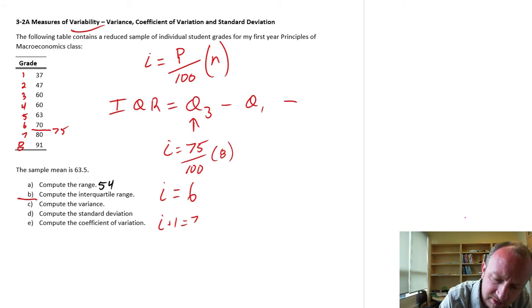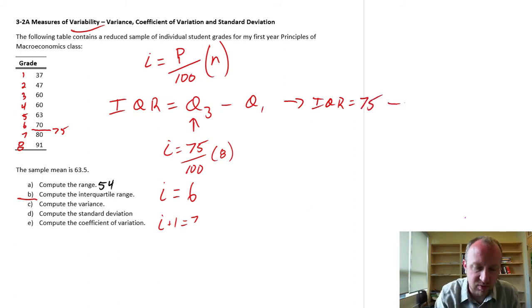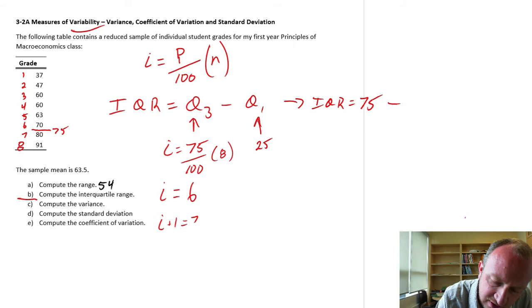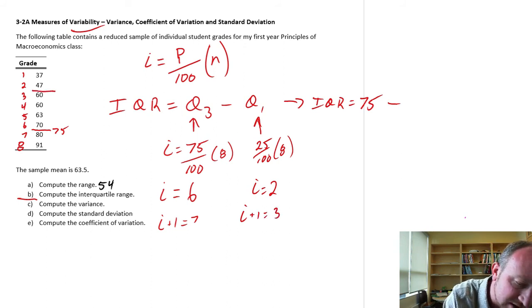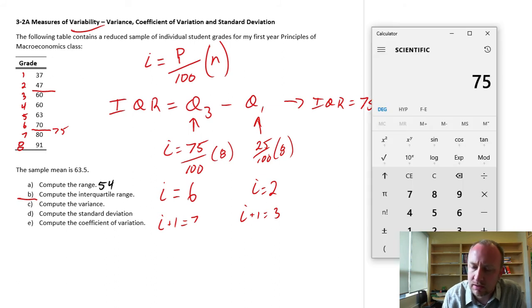And substituting these values in for my IQR, this is 75 minus Q1. So if we go through the same exercise again for Q1, this is 25 over 100 times 8, this will be i equals 2. And so I want to find that difference between i equals 2 and 3. So I'm going to be right here. And that will be the difference. Let's see, 60 plus 47 divided by 2, so 53.5.